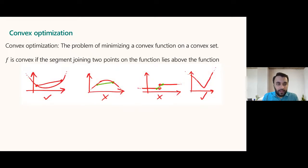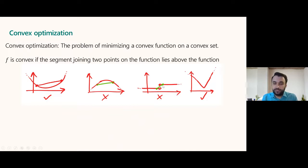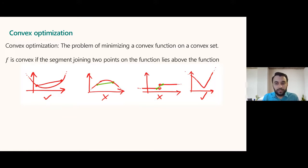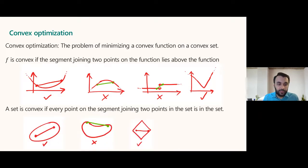I've drawn examples of convex functions. The left example shows two points joined where the segment is above the function. The second example has a segment below the function — that's not convex. The third shows a discontinuous function, not convex. The fourth shows a convex but non-smooth function with an abrupt slope change at the bottom — convex functions don't need to be differentiable. A convex set is one where if you join any two points, the segment lies inside the set. Throughout this talk, the set will always be a ball of radius R.